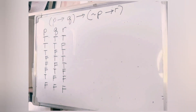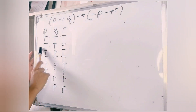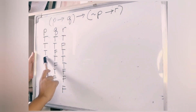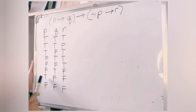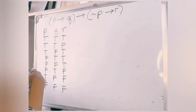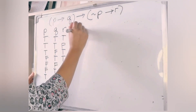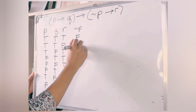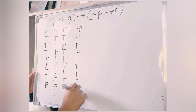The first row has all true statements. Then we have rows with one false case, then rows with only one true case, and finally all false statements. To evaluate this complicated proposition more easily, let's find not P first. All we have to do is negate the P column, giving us: F, F, F, F, T, T, T, and T.